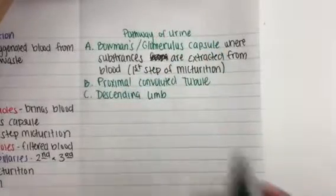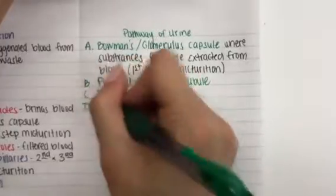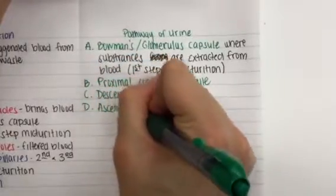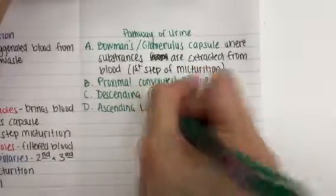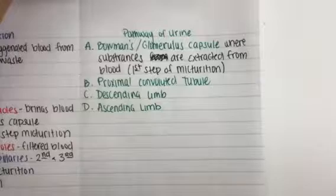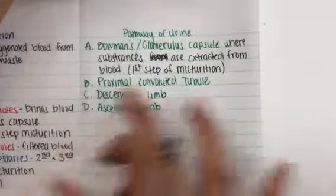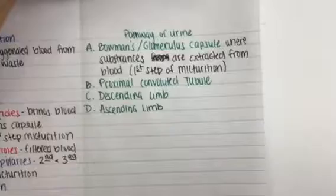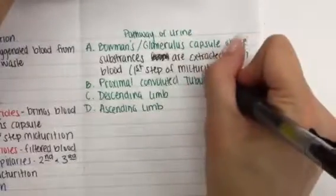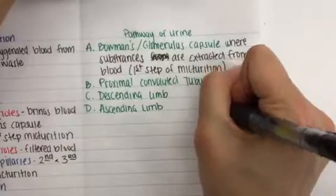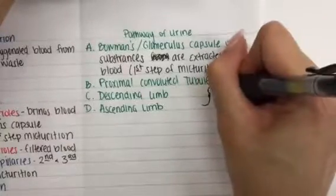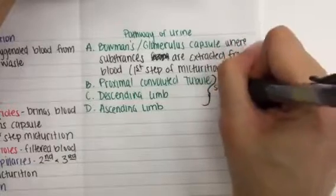And then after urine goes down the descending limb, it'll come back up the ascending limb. And in the proximal convoluted tubule and around the descending limb and parts of the ascending limb, that's where we have the second step of micturition. Step two.